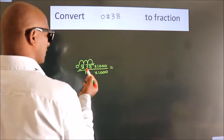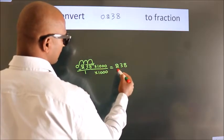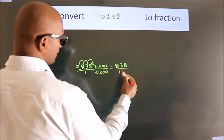0.238 into 1000 equals 238. 1 into 1000 equals 1000.